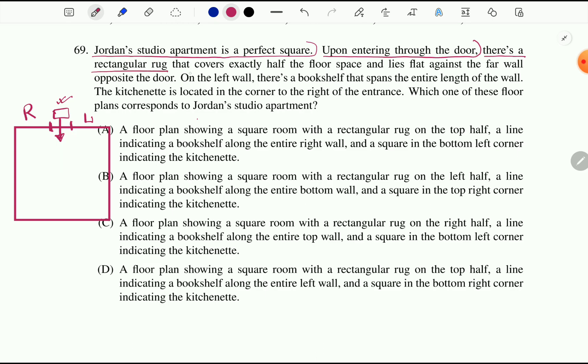Now let's read further. There's a rectangular rug that covers exactly half floor space and lies flat against the far wall opposite the door. Okay so there is a rectangular rug. I believe you know what a rectangle is. This could be the rectangular rug that we are looking for, but in the question it is saying that the rug is exactly half of the floor space.